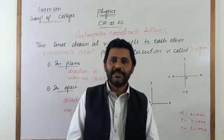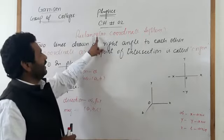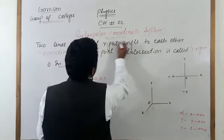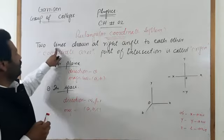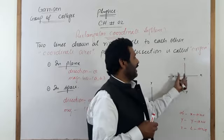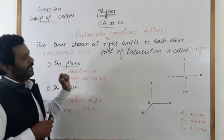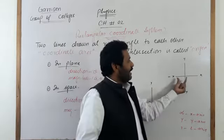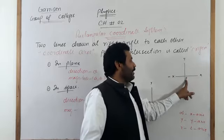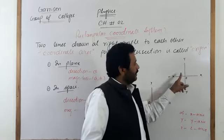Our topic for today is the rectangular coordinate system. These are two lines drawn at right angle to each other, called coordinate axes. Their point of intersection, always represented by capital O, is called the origin. From the origin, the rightward line is the x-axis and the leftward direction is the negative x-axis.